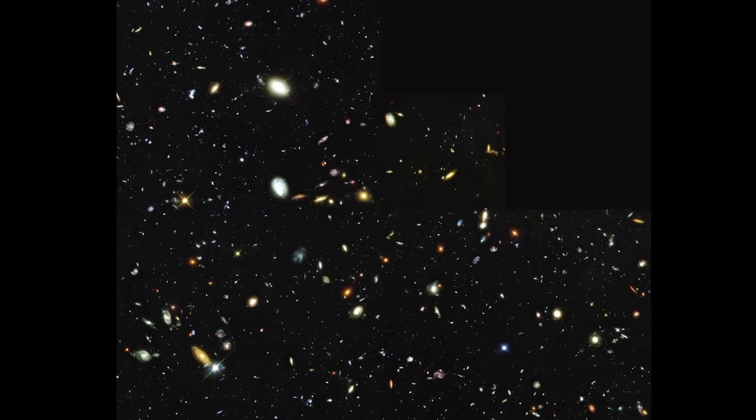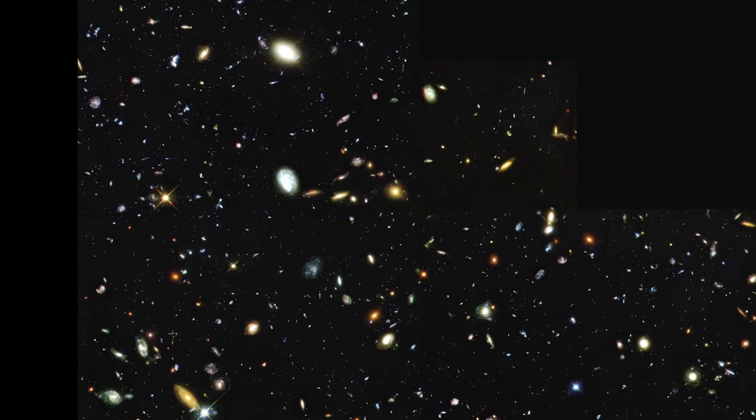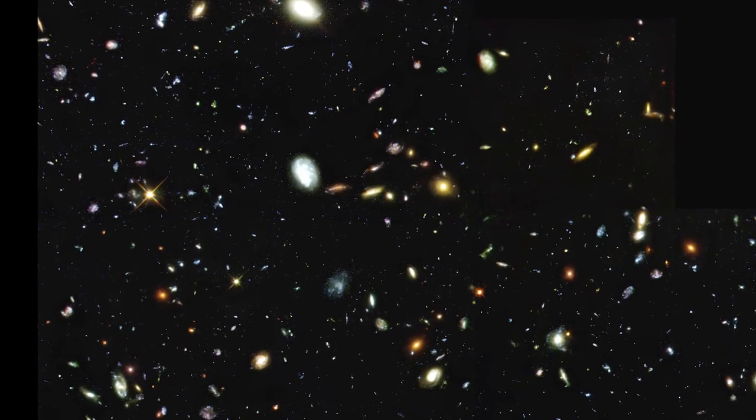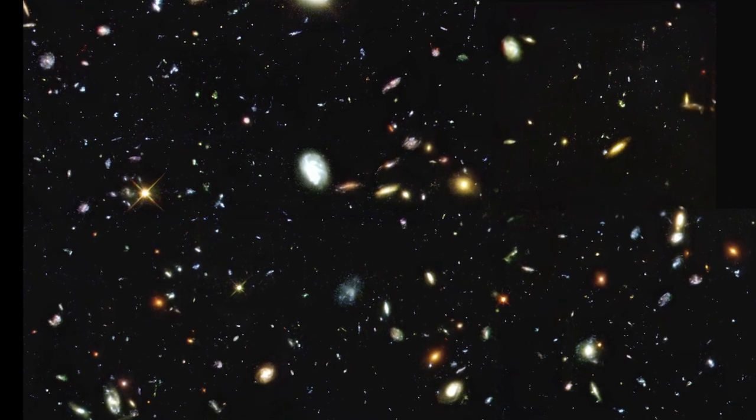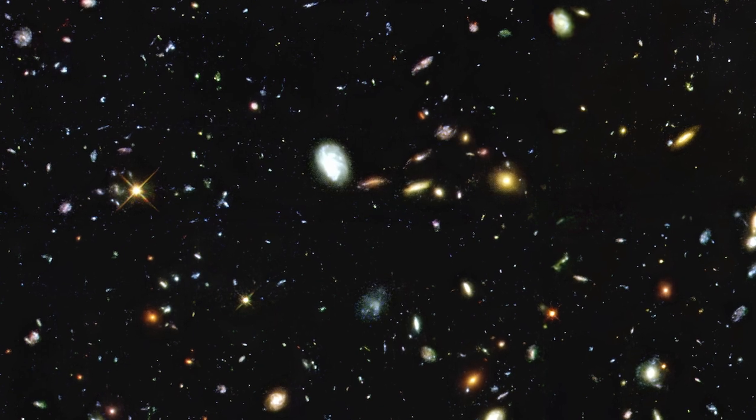The original and now-famous Hubble Deep Field image, released in 1996, consisted of an area of sky with a width equal to just one twelfth that of the full Moon. In it, Hubble found almost 3,000 distant galaxies.